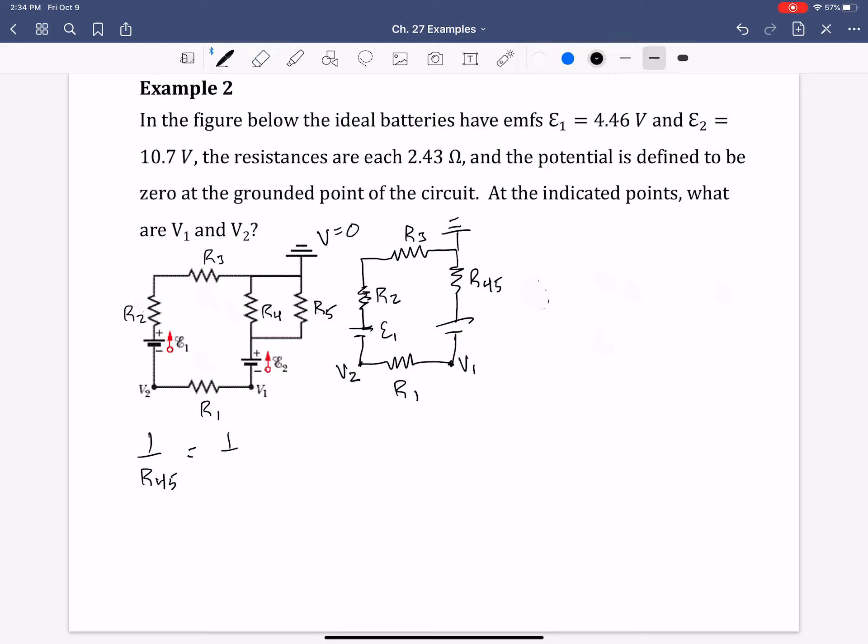All right. R45. Now we're good. So 1 over R4 plus 1 over R5, if they're both the same of 2.43 ohms, we can simply write this: 1 over 2.43 plus 1 over 2.43 equals 2 over 2.43. And R45 is 1.22 ohms.